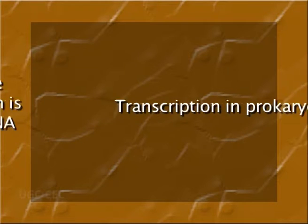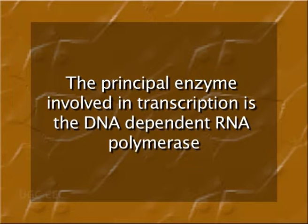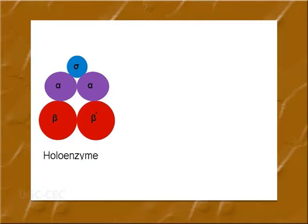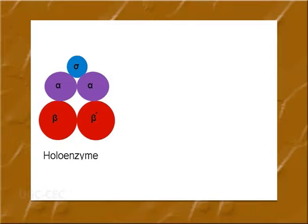We will discuss transcription in both prokaryotes as well as in eukaryotes. First, transcription in prokaryotes: the principal enzyme involved in transcription is the DNA-dependent RNA polymerase. The bacterial RNA polymerase consists of five polypeptide chains, including two chains of alpha polypeptide, one chain of beta, one of beta-dash, and one sigma polypeptide. The RNA polymerase molecule can thus be represented as α₂ β β' σ.